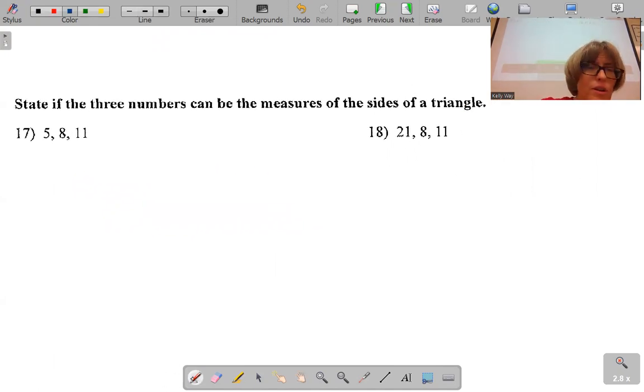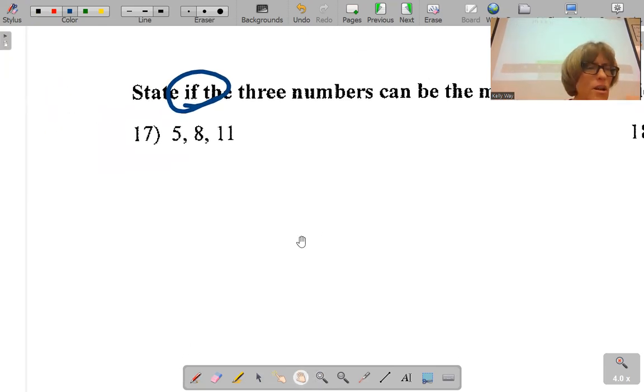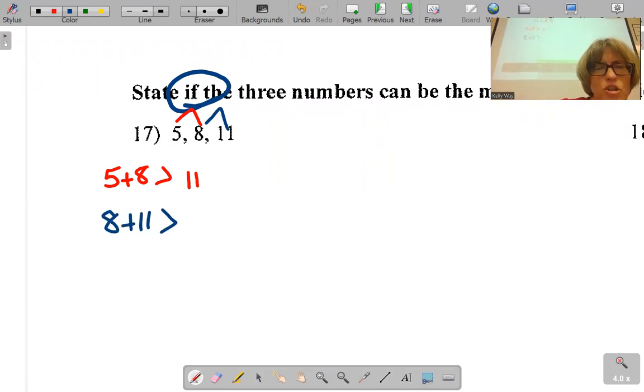So state if they can be measures of the sides of a triangle. This is where you do eyebrow, eyebrow, smiley, you test it. I call this clown face. So eyebrow, five plus eight has to be bigger than 11. Eyebrow, eight plus 11 has to be bigger than five. Smiley, five plus 11 has to be bigger than eight. And then you check and you see if all three are true.